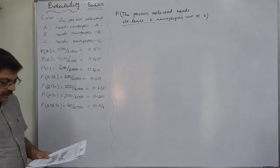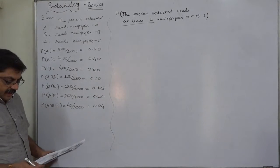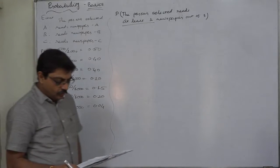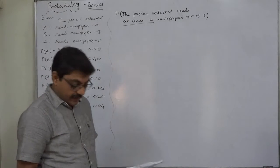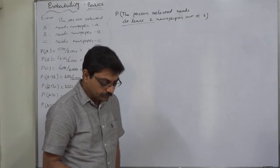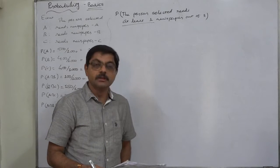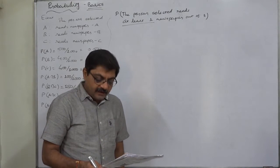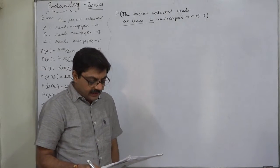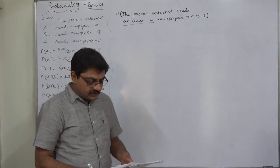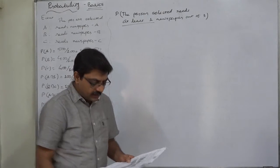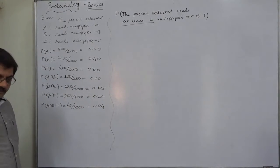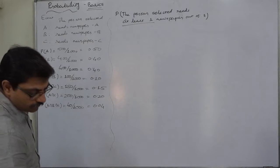100 read both A and B, 150 read both B and C, and 200 read both A and C. 40 people read all three newspapers. Find the probability that a person selected at random from the locality reads at least one newspaper — that means at least one out of three.